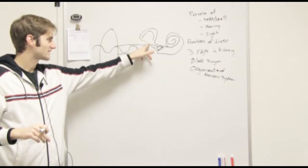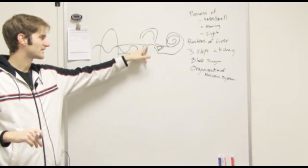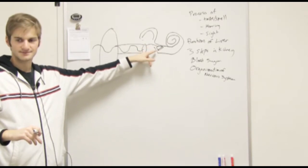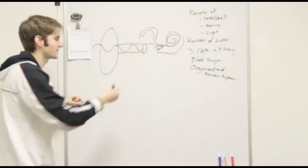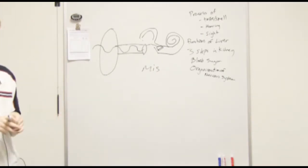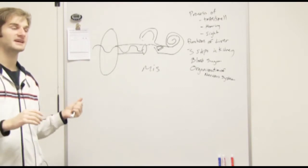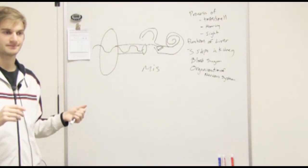Now there's the three bones. There's the malus, incus, and stapes. I can't remember the order. Just remember MIS: malus, incus, stapes. So the tympanic membrane hits the bone, right? Yeah. The malus is connected to the tympanic membrane.